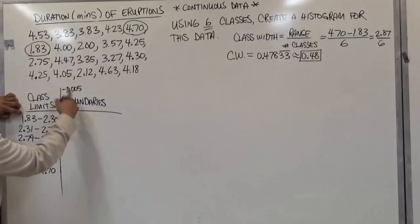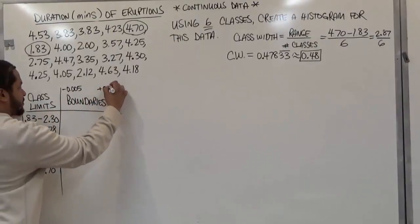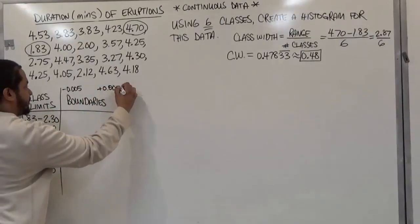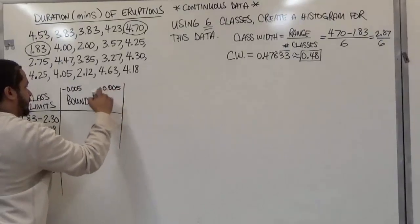We're going to subtract that, and we're going to add five thousandths to the right limit. And that's the zero there.